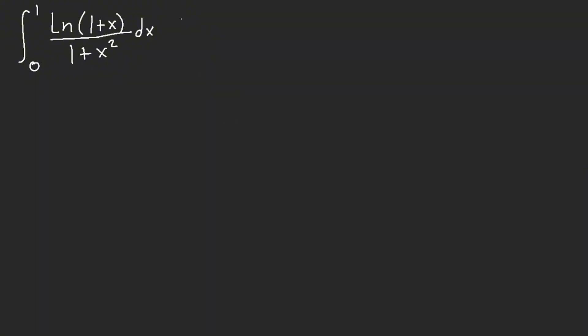So how do you deal with this? 1 plus x squared is at the bottom, so what we're going to do is let x equal tangent theta. So this is going to give us from 0 to pi over 4, ln of 1 plus tangent theta.